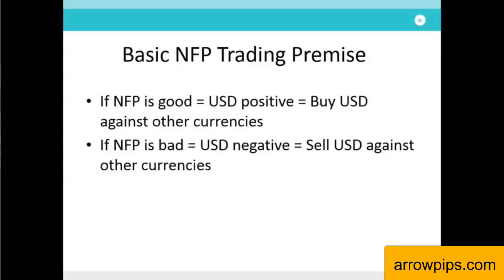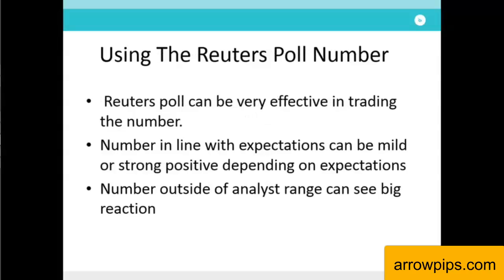The Reuters poll gives us both the industry average expected as well as the range of forecasts, so we know how the market is gauging the number ahead of the release and hence we can judge the likely impact. A number in line with consensus may see only mild USD buying if the number is expected weaker than previous. However, if the number beats expectations it may see more pronounced buying, and if it prints above the upper limit of the forecasted range, dollar buying is likely to be quite sharp. Similarly, a number printing below expectations can see USD selling, and this selling may be more pronounced the worse the miss.